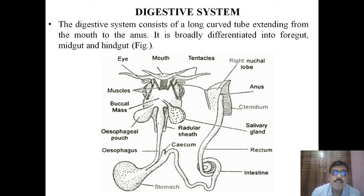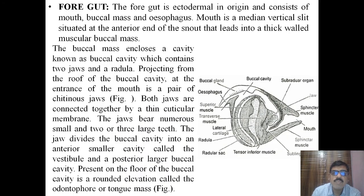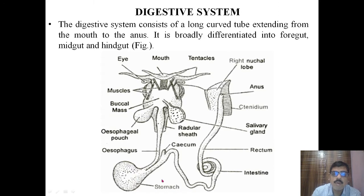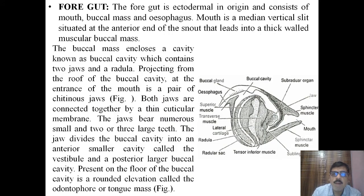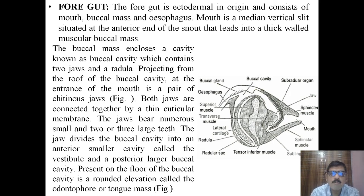The three parts are the foregut, midgut, and hindgut. The foregut is ectodermal in origin and consists of the mouth, buccal mass, and the esophagus. The mouth is a median vertical slit situated at the anterior end of the snout that leads into a thick-walled buccal mass.